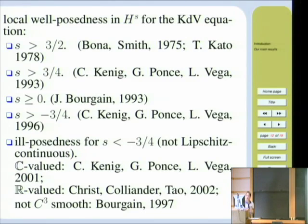Later, Bourgain pushed the regularity to s equals to zero by developing some special structures associated to the equation, now named as Bourgain space. And then, in 1996, it was further pushed to negative 3/4.